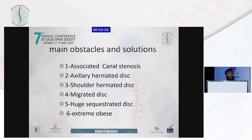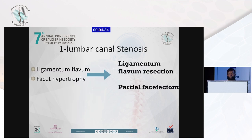Our main obstacles we'll talk about today are: canal stenosis and how to manage it, axillary herniated disc, shoulder herniated disc, migrated disc, huge sequestrated disc, and discectomy in the extremely obese patient. Simply, if the patient has ligamentum flavum hypertrophy or facet hypertrophy, it is not our standard, but in these cases, we should do ligamentum flavum resection and partial facetectomy.